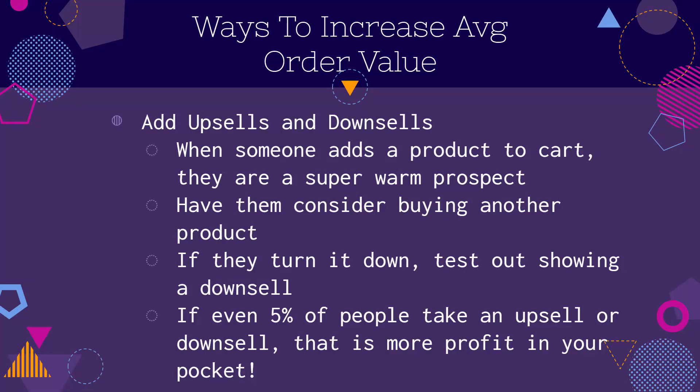So what are some ways to increase average order value? Of course, you want to add upsells and downsells. When someone adds a product to cart, they are a very warm prospect — pretty much one step away from becoming a customer. To increase your average order value, have them consider buying another product. It could be an add-on, a completely different product, the same product they buy multiples of, or a bundle. And it doesn't only have to be an upsell — if they turn down an upsell, you could show a downsell. Even if 5% of people take an upsell or a downsell, that's 5% more money in your pocket without any additional ad spend.